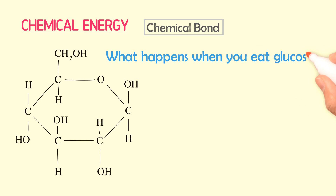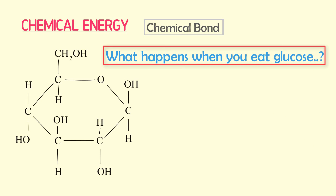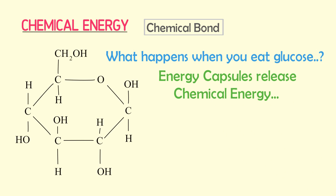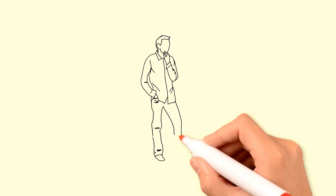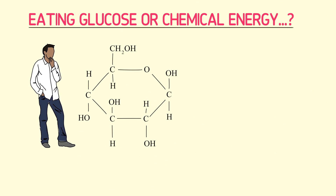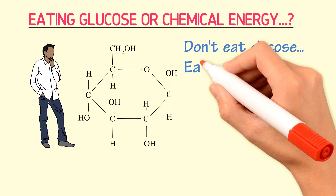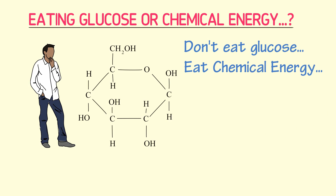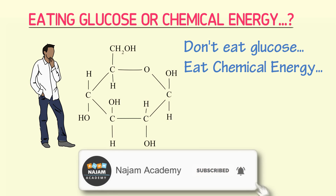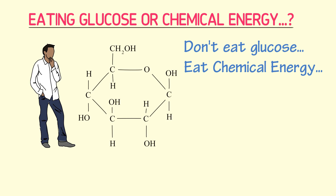Now what happens inside your body when you eat this glucose molecule? After digestion, the energy capsules of glucose will release chemical energy into the cell during aerobic respiration. Now let's think for a while — are you eating glucose or chemical energy? In reality, you and I do not eat glucose. We eat chemicals in the form of glucose or food. So from this example, we learn that we do not need food — we need chemical energy.